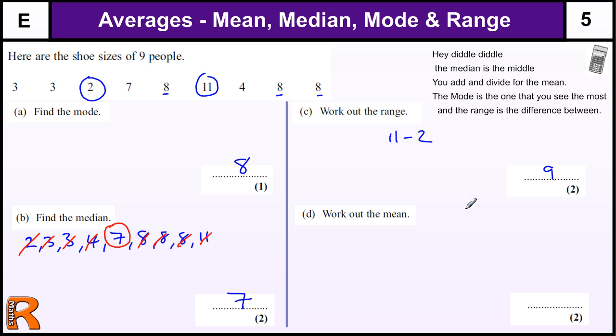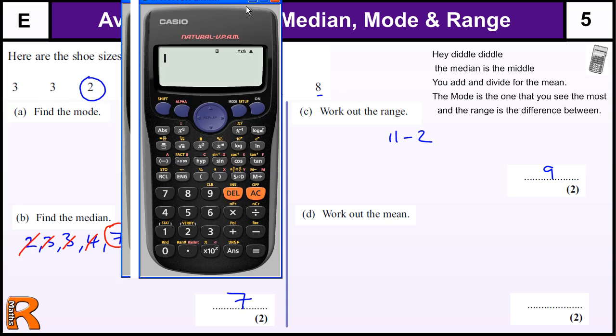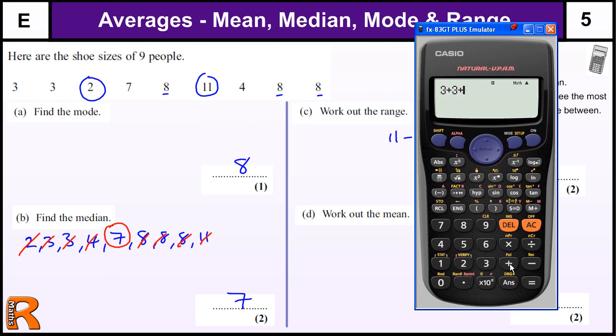And the mean, you add and divide for the mean. So as we're allowed to use a calculator, we might as well get a calculator out and add them up. So we've got three plus three plus two plus seven plus eight plus eleven, four, and two more eights.